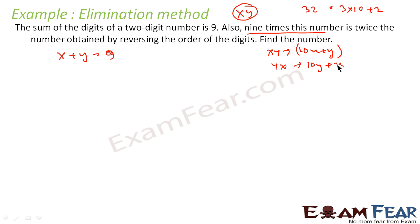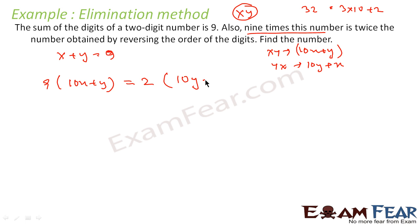The question says 9 times this number — that is 9 times (10x plus y) — is twice the number obtained by reversing the digits, which is 10y plus x. So we have the first condition: x plus y equals 9, and the second condition: 9 times the number equals twice the reversed number.